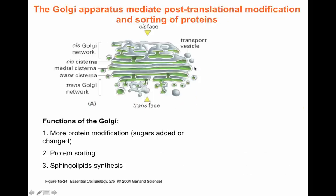The intermediate destination of any vesicle traveling across the cell is going to be the Golgi apparatus. The Golgi apparatus is a complex network of membranes subdivided into three major regions. Closest to the ER, we have the cis-Golgi network. In the middle of the Golgi, we have the cisternae — the cis cisterna, the medial cisterna, and the trans cisterna. Farthest from the ER and closest to the membrane, we have the trans-Golgi network.